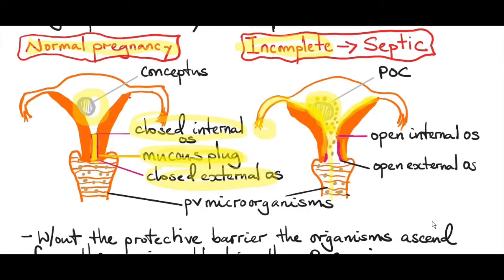Remember that the uterus is situated between the rectum and the bladder — anteriorly the bladder and posteriorly the rectum. Between the rectum and the posterior aspect of the uterus, you have the pouch of Douglas. If the infection is not contained, it can cause infection of the pouch of Douglas, resulting in a pelvic abscess, as well as infecting the peritoneum around it, causing peritonitis.